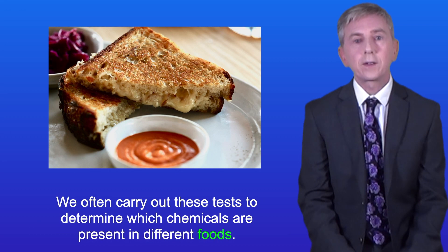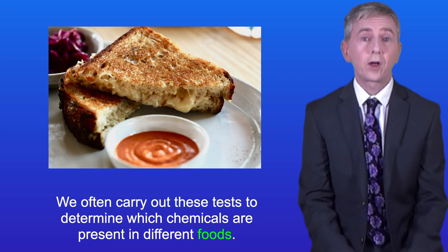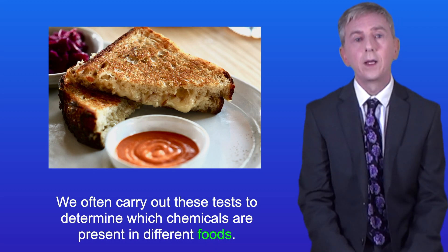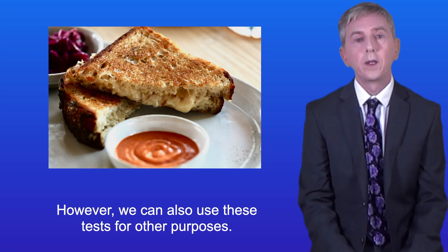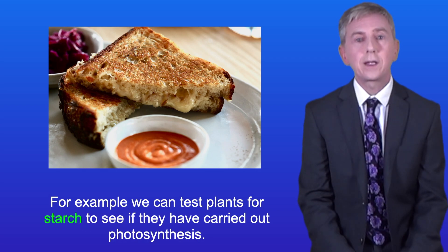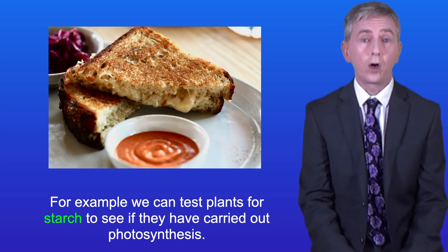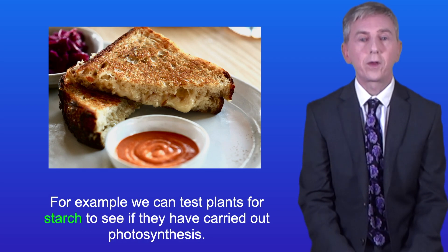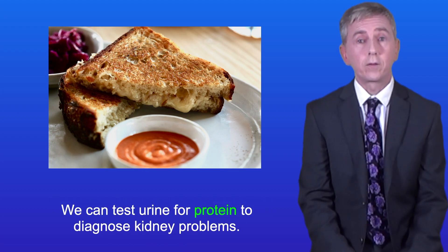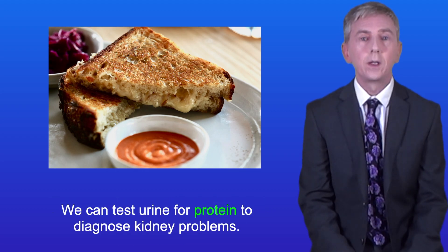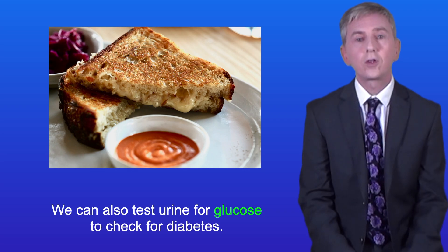We often carry out these tests to determine which chemicals are present in different foods. However we can also use these tests for other purposes. For example we can test plants for starch to see if they've carried out photosynthesis, and we can test urine for protein to diagnose kidney problems. We can also test urine for glucose to check for diabetes.